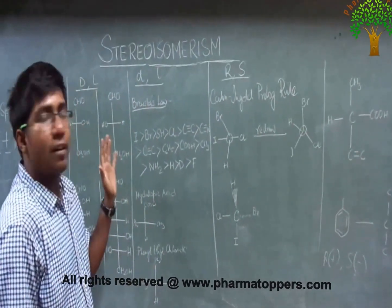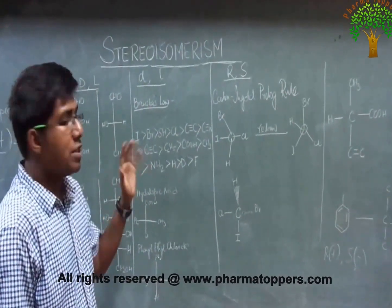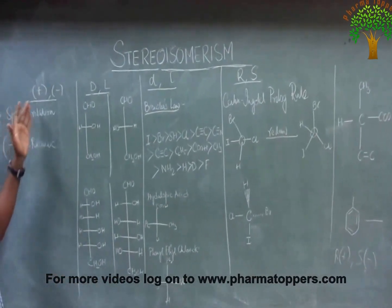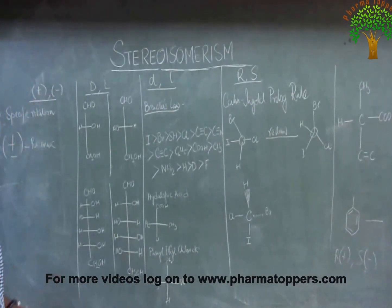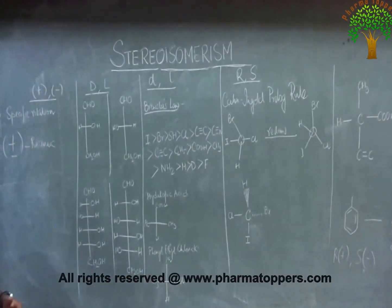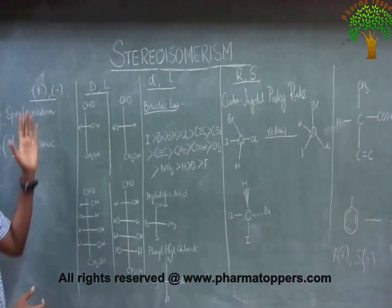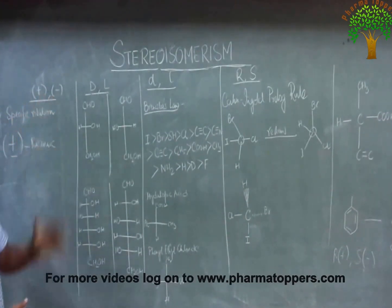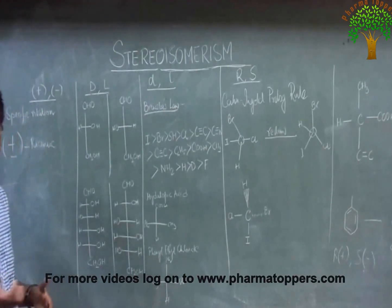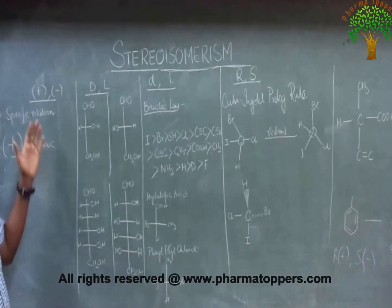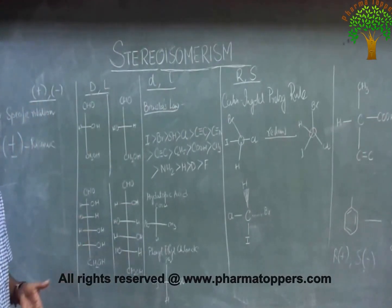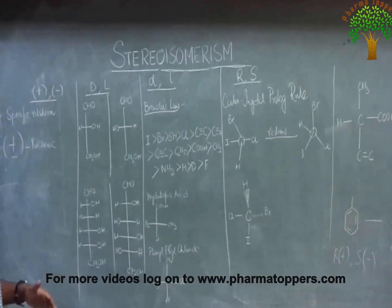We will come to each of these topics one by one. First, what is plus and minus? We have already studied this. Based on the optical rotation of a compound, we can differentiate it as plus or minus. When plane polarized light rotates to the right, we give a plus notation; when it rotates to the left, we give a minus notation.